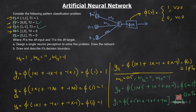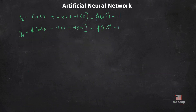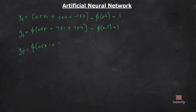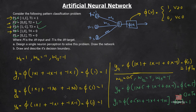Checking P5: y5 equals phi(0.5 times 1 plus 0 times minus 1 plus 1 times minus 1) equals phi(minus 0.5), which is 0. Therefore it is also satisfied for input set P5. The final weights w11=0.5, w12=minus 1, w13=minus 1 satisfy all five input patterns.